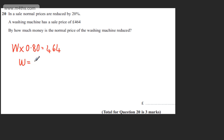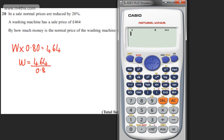So the washing machine was equal to 464 divided by 0.80 or 0.8. It's a calculator question, so if you're unsure, just put it through the calculator and we can find that value. So that gives us £580.